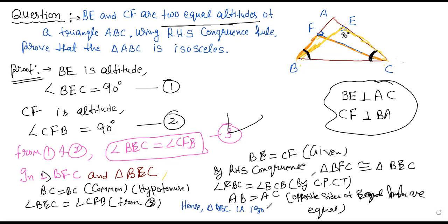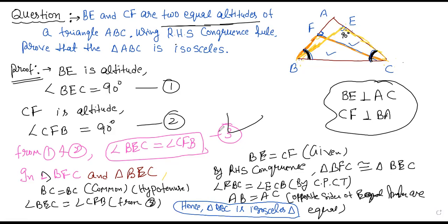So we can write at the last: triangle ABC is an isosceles triangle. I hope you understand the solution. It is very easy to prove. If in a triangle two altitudes drawn from two vertices are equal, prove the triangle is isosceles: first prove by RHS rule that the two triangles are congruent, then by CPCT the angles are equal, so their opposite sides are also equal and the result is proved. Thank you so much — see you with some new question in a new video. Thank you.